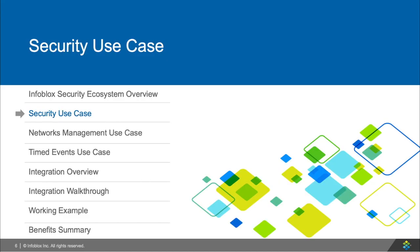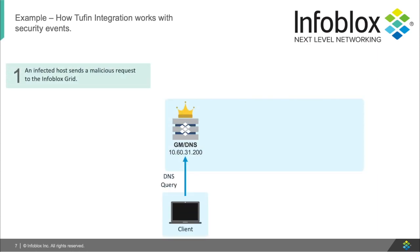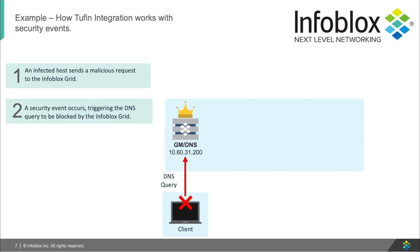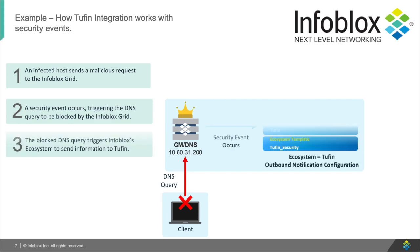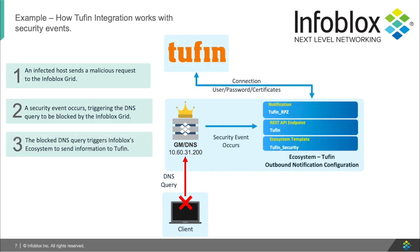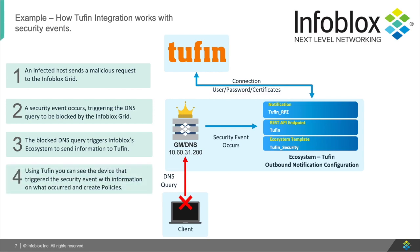Let's look at the security use case. Here, a user tries to make a DNS request to a domain that isn't allowed. Next, the DNS request is blocked by Infoblox. Infoblox's ecosystem templates are then triggered, sending information about the event to Tuffin. Finally, using Tuffin, admins can see the events with information on what just occurred and create customized policies to handle it.